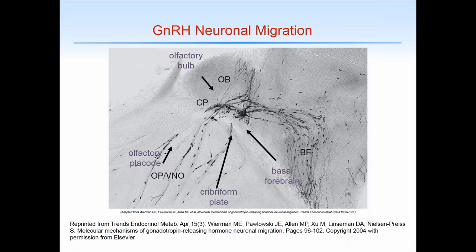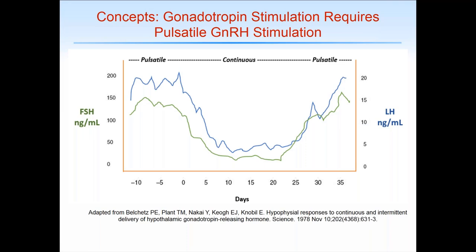Abnormalities in this migration are important for the development of Kallmann syndrome. Like many hypothalamic hormones, GnRH is secreted as pulses, which are critical for appropriate biosynthesis and secretion of LH and FSH. This was first described by Ernst Knobil in his Nobel Prize-winning work. He transected the infundibulum in a primate system so he controlled the GnRH reaching the pituitary. In response to pulsatile GnRH, the pituitary secreted large amounts of LH and FSH. However, when he switched to continuous stimulation, levels of LH and FSH dropped markedly. When he returned to pulsatile GnRH secretion, the cells happily secreted LH and FSH again.